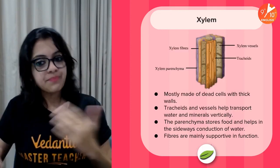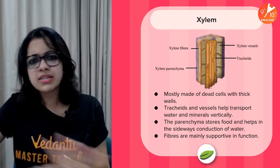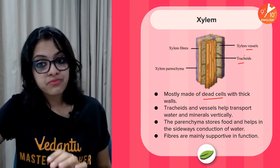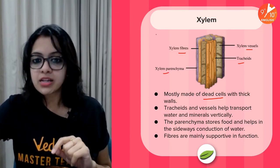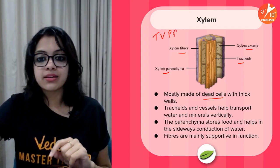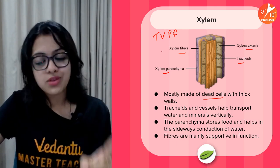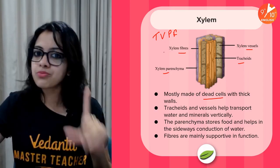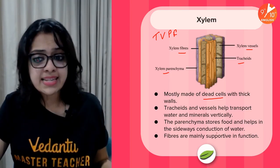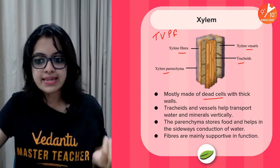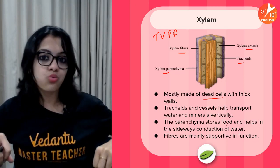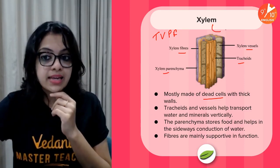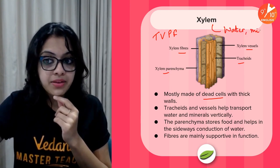Xylem is mainly made up of dead cells with thick walls. It has four major kinds of elements: tracheids, xylem vessels, xylem parenchyma, and xylem fibers — abbreviated as TVPF. Xylem parenchyma stores food and helps in sideways conduction of water; fibers are mainly supportive. Xylem transports water and dissolved minerals in the plant body.